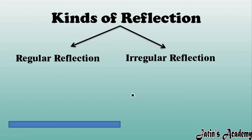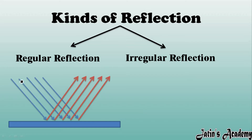See carefully — in regular reflection, we always have a plain polished surface. A parallel beam of light strikes on this plain polished surface, and after striking, it reflects back in the same parallel way only.